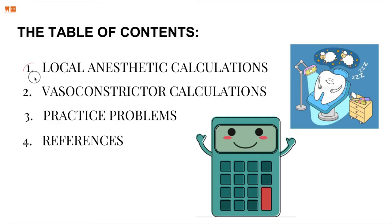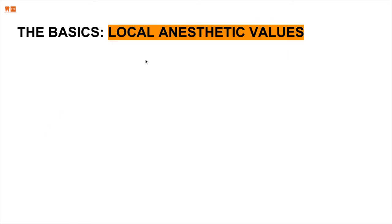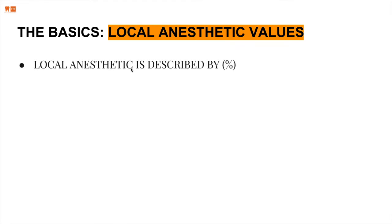Local anesthetic and vasoconstrictor — two of the most heard concepts when it comes to local anesthesia. When we calculate the maximum dose required for a patient, we use two variables: the local anesthetic and then the vasoconstrictor values. We will take care of two practice problems at the end of the lecture. First, we need to understand the local anesthetic values and units.